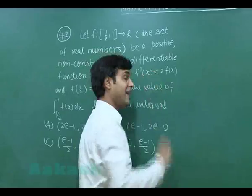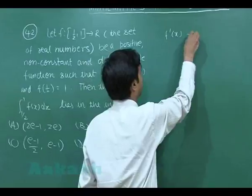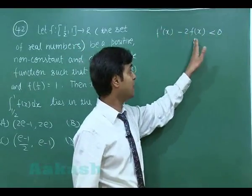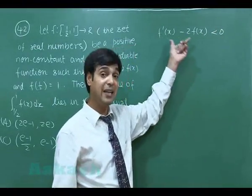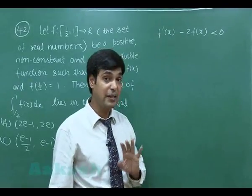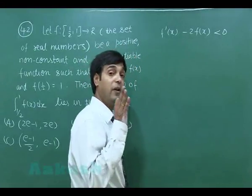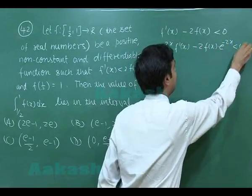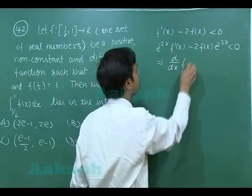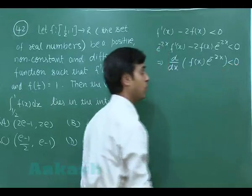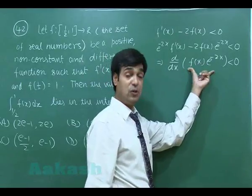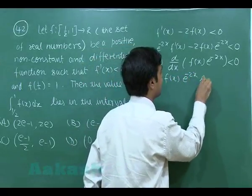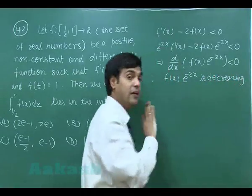Starting with the inequality f'(x) < 2f(x), which suggests f'(x) − 2f(x) < 0. This is a linear differential equation whose integrating factor is e^(−2x). Multiplying through by e^(−2x), we get e^(−2x)·f'(x) − 2f(x)·e^(−2x) < 0, which gives d/dx [f(x)·e^(−2x)] < 0.